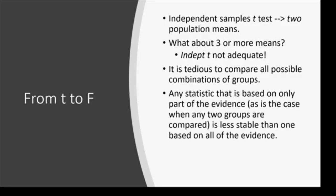A more important reason not to run an independent T-test when you have three or more groups is that any statistic based on only part of the evidence is less stable than one based on all the evidence. If I'm just looking at groups one versus two and completely ignore that three is in there, I'm ignoring my data and my statistics are less stable and less reliable — they're not going to be truly informative. If instead I factor in groups one, two, and three at the same time, I have something that is more stable and a more accurate reflection of the picture.